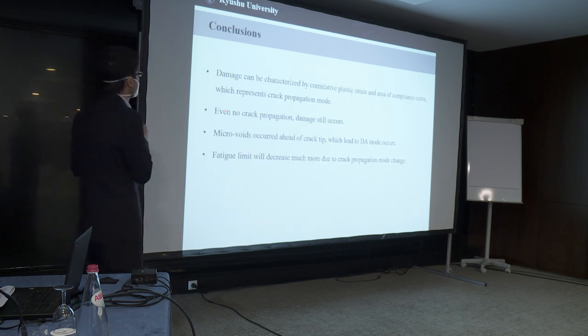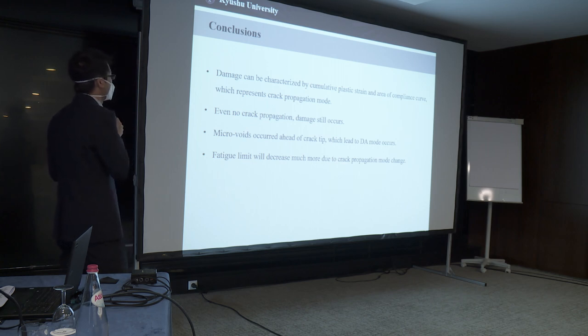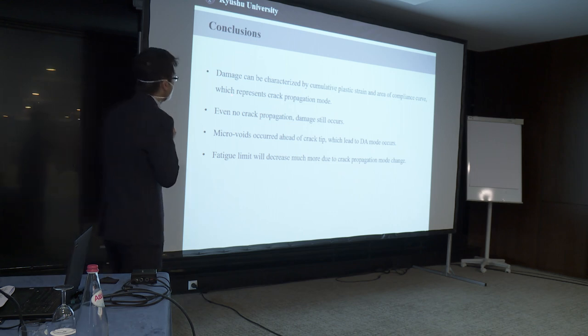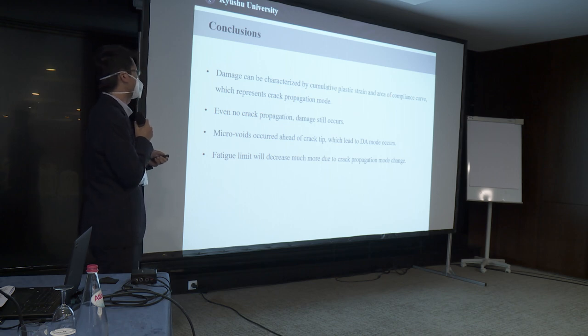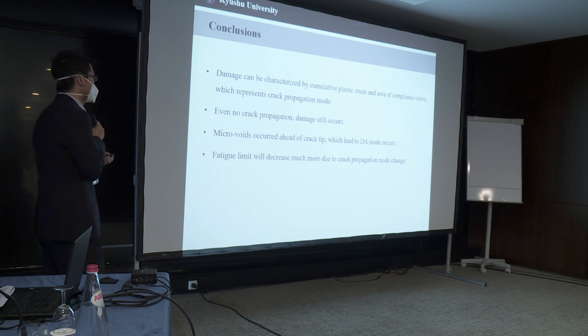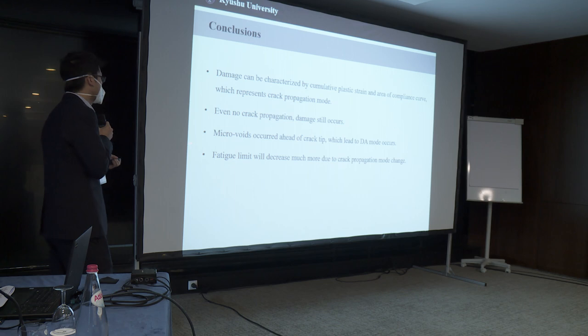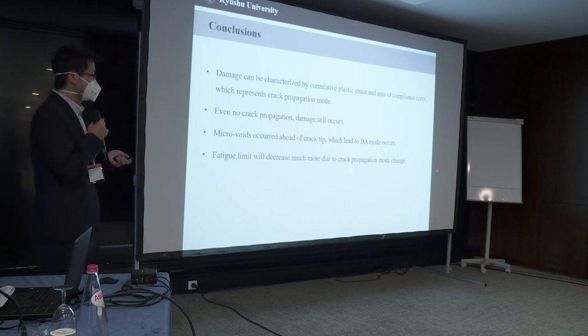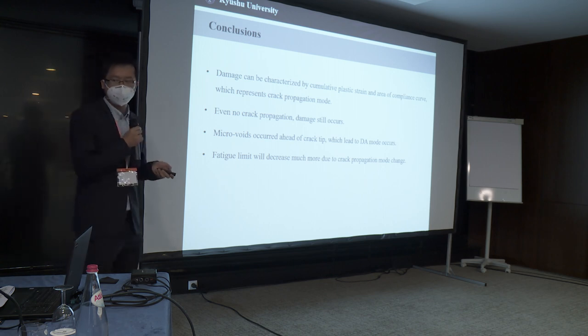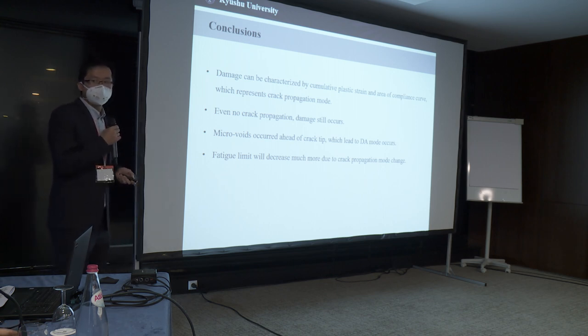So finally, I'd like to give my four points in conclusion. First, damage can be characterized by cumulative plastic strain, and the error of the compliance curve represents the crack propagation mode. The second, even with no crack propagation, damage still occurs. So damage shouldn't be only the crack length. And third, micro voids occurred ahead of the crack tip, which lead to the DA mode occurs. And the fourth, the fatigue limit will decrease much more due to the crack closure mode or crack closure force decrease. That's my today's presentation. Thank you for all.